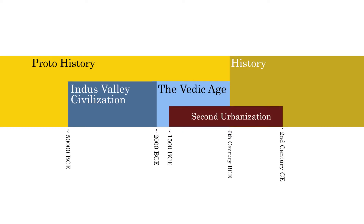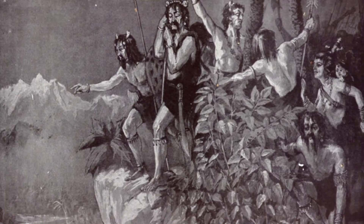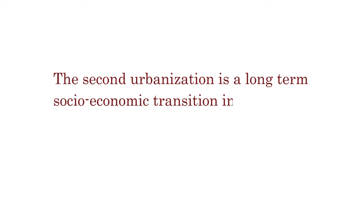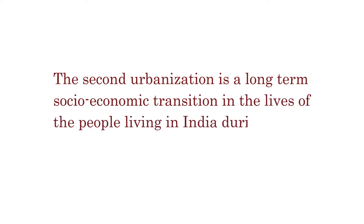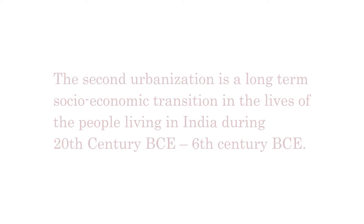As we've seen in the previous episodes, the Aryans lived in the Saptasindhu region after the downfall of the Indus Valley Civilization, which we call the Vedic Age. The second urbanization is a long-term socio-economic transition in the lives of the people living in India during the 20th century BCE to the 6th century BCE.